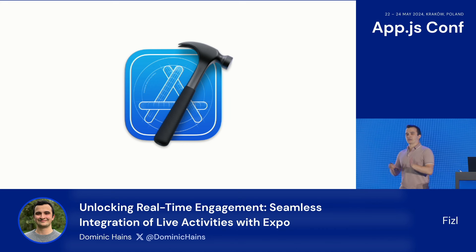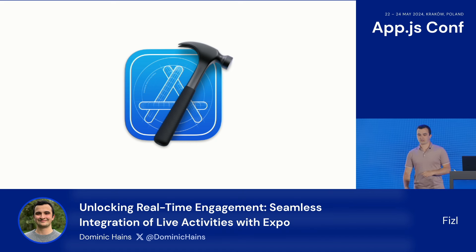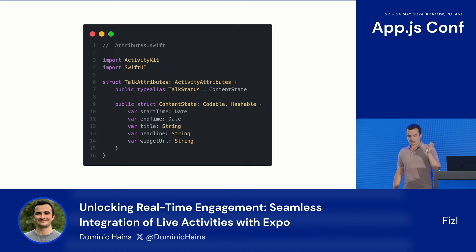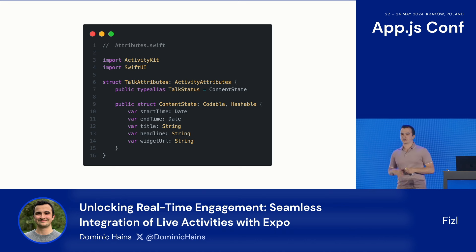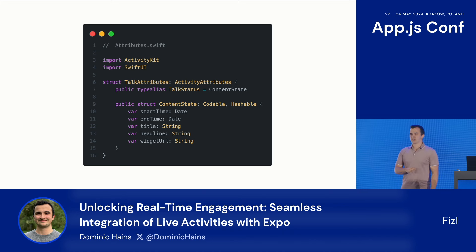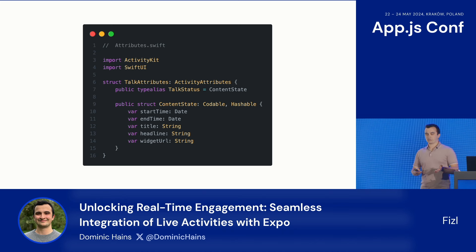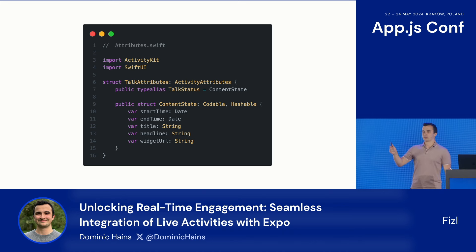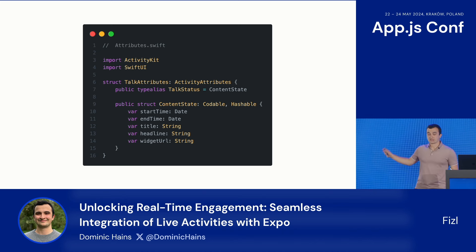Everything that we're going to see next is built in Xcode — it's VS Code screenshots because that's the best way to take screenshots, but anyway let's go through the code. Let's start with the information that we want to pass through the live activity — all the way from our main app bundle to the view. This is probably the most important struct we're going to work with. We have a start time, an end time, a title, a headline, and a widget URL.